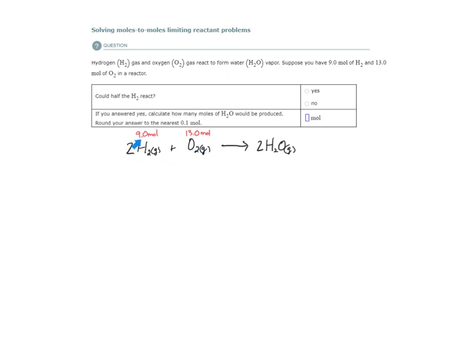Well, what's half of 9? Half of 9 is 4.5. So half of 9 moles of hydrogen gas is 4.5 moles of H2. So in order to determine if 4.5 moles of H2 would react given these amounts, what we're going to do is we're going to convert from this to this.